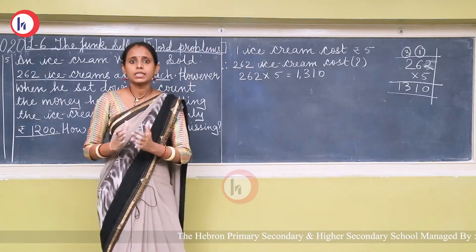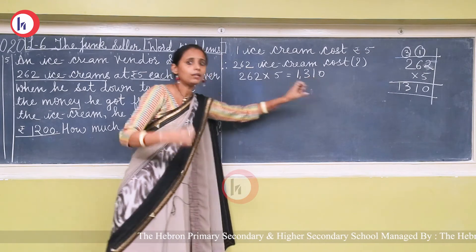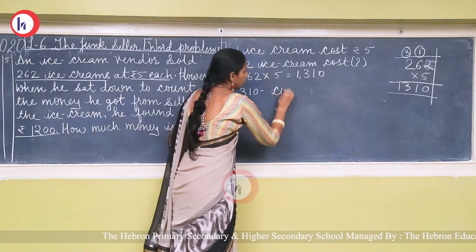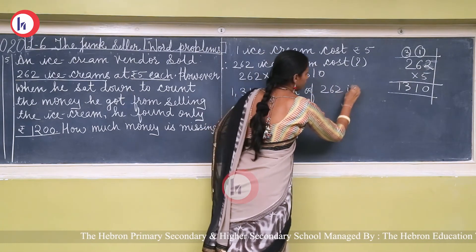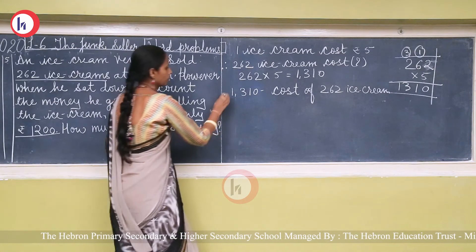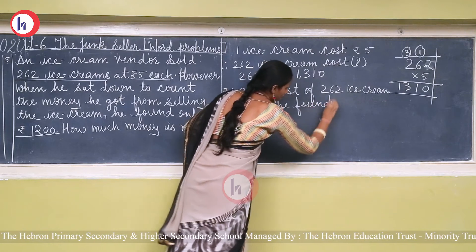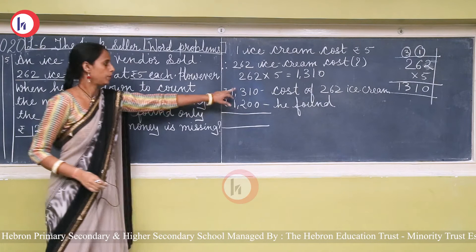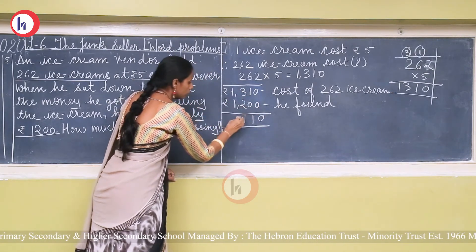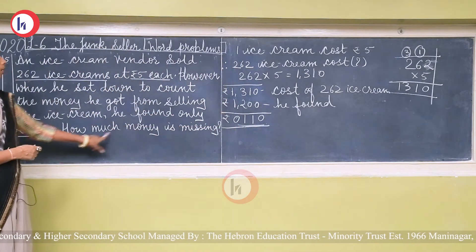To find the missing amount, subtract: 1310 − 1200. The difference is 110. So rupees 110 is missing.